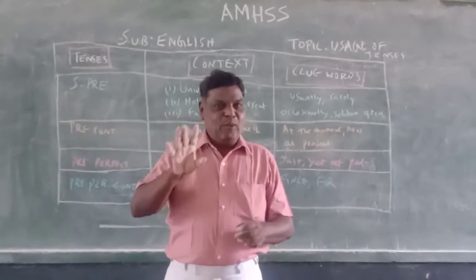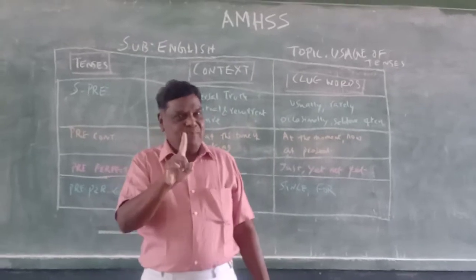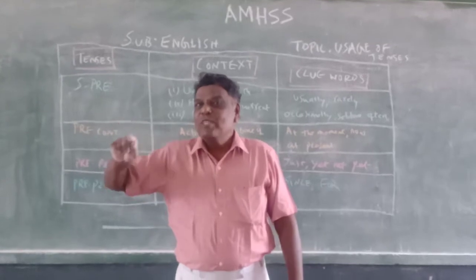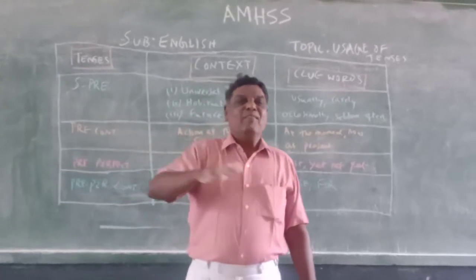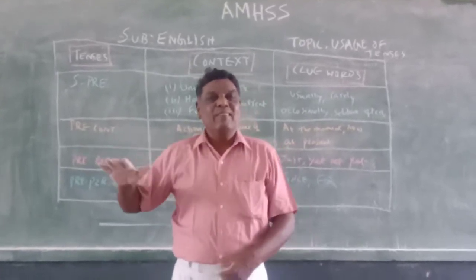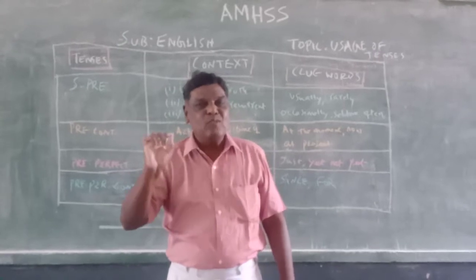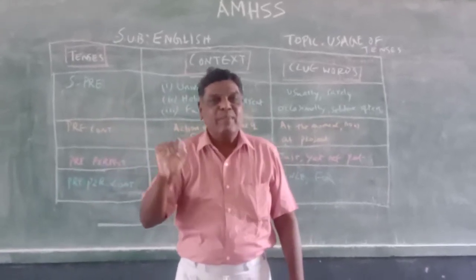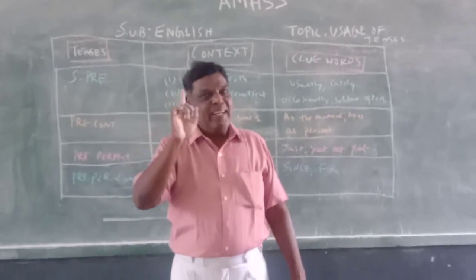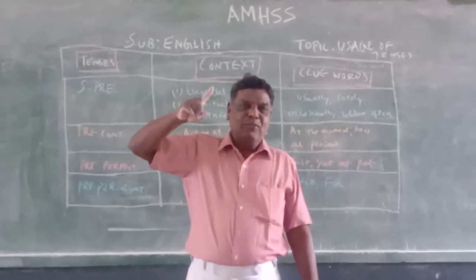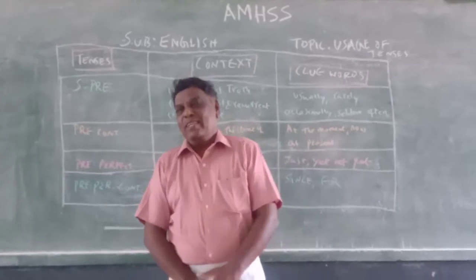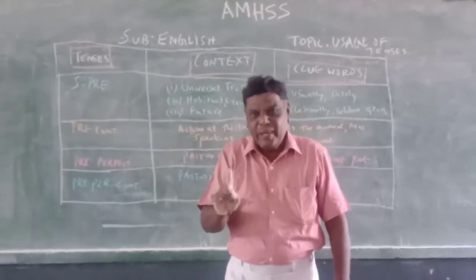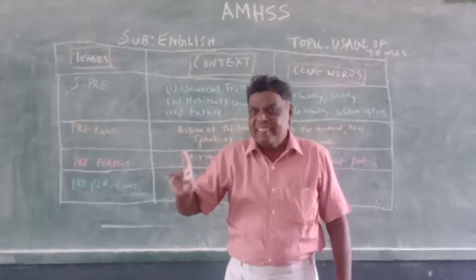Past perfect: Mohan had eaten — had plus past participle. And Mohan will have eaten — will have plus past participle — that is future perfect. Then present perfect continuous: has/have plus been plus verb plus -ing. And finally, Mohan will have been eating — will have been plus verb plus -ing — future perfect continuous.